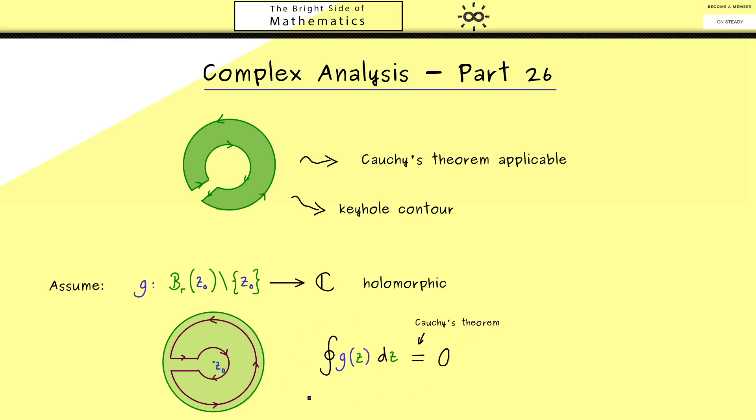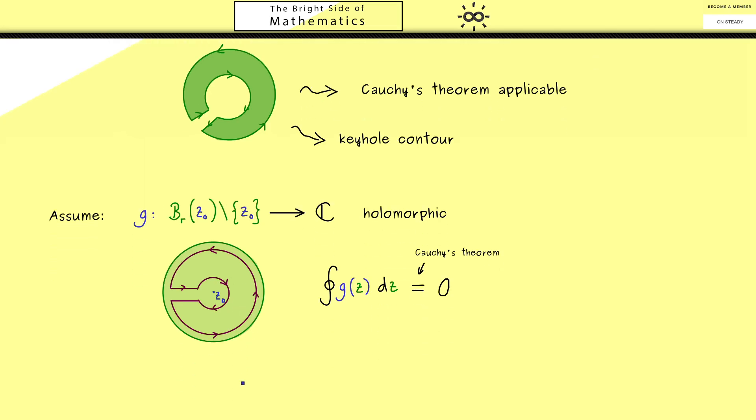And please note this holds no matter how this keyhole is formed or orientated. In particular, we can introduce two parameters here. The first one should be the radius of the inner circle, let's call this one simply epsilon. And the second parameter should be simply the width of the corridor here, and maybe let's call this one simply delta. Hence, we assume that the outer radius here for this circle is fixed for our discussion here. Then the name we give the curve is gamma with index epsilon delta. And then our result here is, no matter how small the positive numbers epsilon and delta are, we always get that the contour integral is 0.